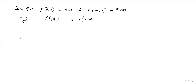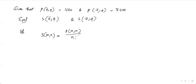Now, given that P of six comma four equals 1560 and P of seven comma four equals 8400, let us find the values of S of six comma four and S of seven comma four. We use the formula S of m comma n equals P of m comma n divided by n factorial.